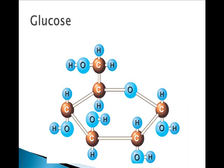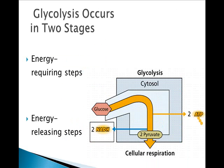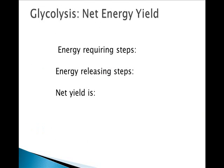Glycolysis is like most machines — you have to put energy in to get energy out. Enzymes in the cytoplasm catalyze several steps in the breakdown of the six-carbon sugar glucose into two molecules of pyruvate, which are three-carbon sugars. The end products of glycolysis for each glucose molecule are two pyruvates, two ATPs, and two NADH trucks. The energy-requiring steps consume two ATP, the energy-releasing steps produce four, so your net yield is two ATP.